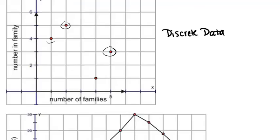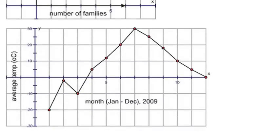Whereas if we look at this next graph, we see that our specific points have been connected with lines. So this is continuous data.